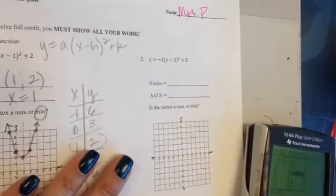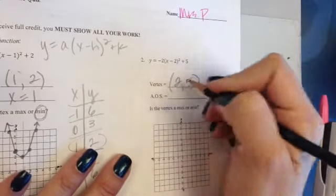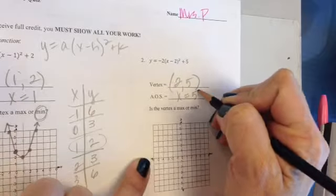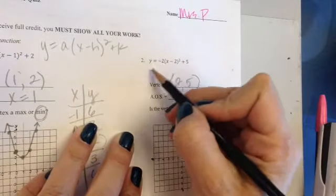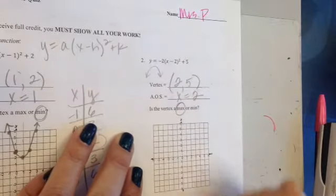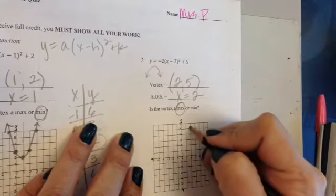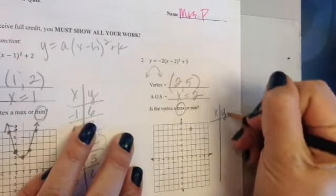For number 2, the vertex is sitting at 2 and positive 5. That puts the axis of symmetry at x equals 2. This parabola is going to open down. It has a negative A value, so that's going to make the vertex a maximum. 2 and 5 will be the top, or the maximum, of this parabola.